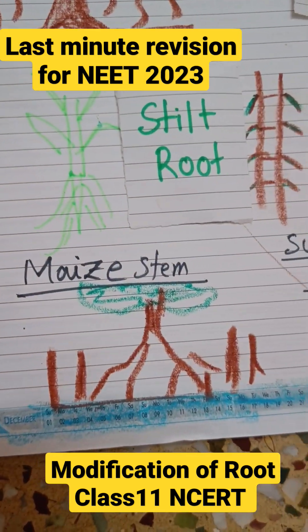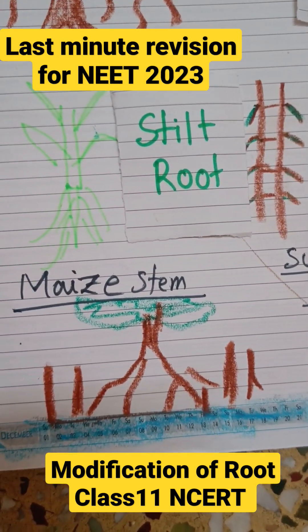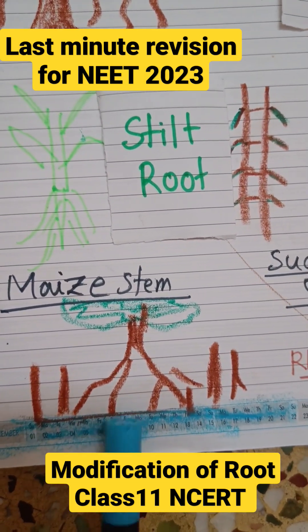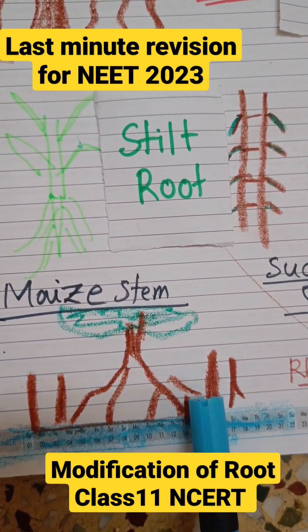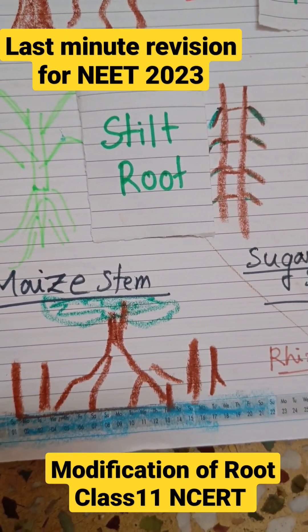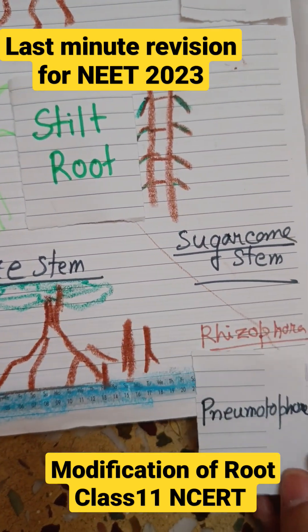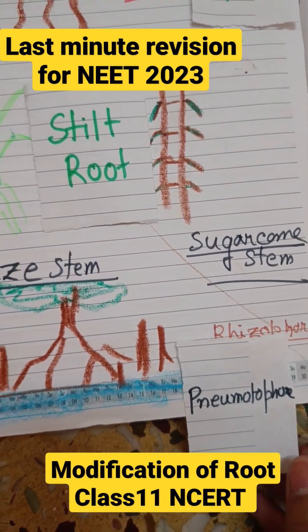The last and most important example is Rhizophora, which can be found in swampy areas. These vertically upward growing roots are called pneumatophores. So, Rhizophora is an example of pneumatophores.